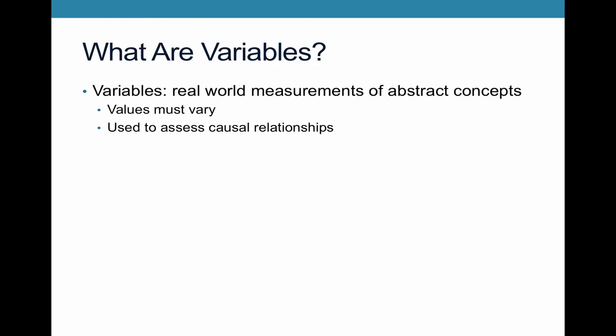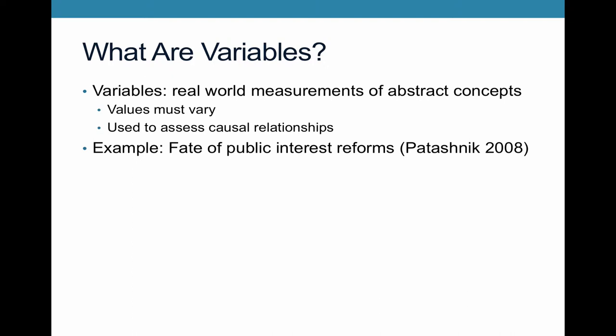To get at the intuition behind what variables are, I want to talk through an example, because this can be abstract and difficult to understand if you're not used to the variable framework. I'm going to talk through an example from a book I love by Eric Potashnik called Reforms at Risk. This book examines the fate of public interest reforms in the United States — specifically, why some reforms that make the country overall better off are sticky and last a long time, while others are initially passed but then fall apart.